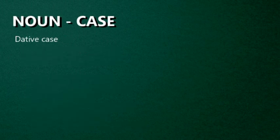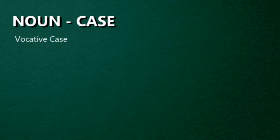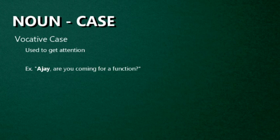Fourth one: Dative Case. When a noun in a sentence is the indirect object of a verb, then the noun is in the dative case. For example: We gave our dog a bone — our dog is the indirect object. There should not be a preposition before the indirect object, because in that case it would be the object of that preposition. Fifth one: Vocative Case. When a noun in a sentence is used to get attention, then the noun is in the vocative case. For example: Ajay, are you coming for the function? — Ajay is the vocative case because it is used to get the attention of that person.